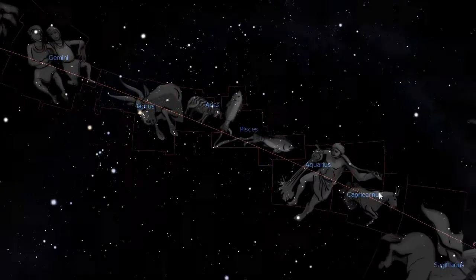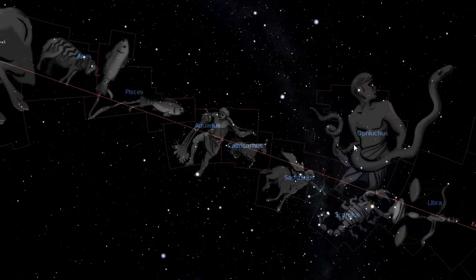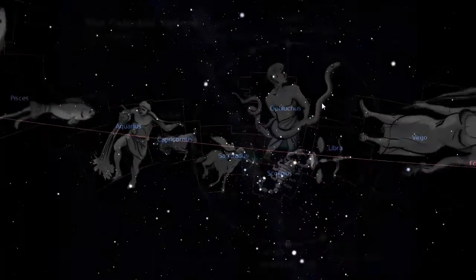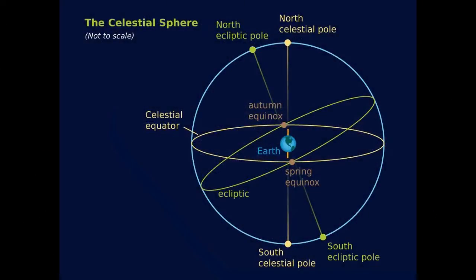The ecliptic crosses the celestial equator at two points, called the equinoxes. At the vernal or spring equinox, the sun appears to cross the equator moving northward in the sky. This marks the beginning of spring in the northern hemisphere and fall in the southern hemisphere.